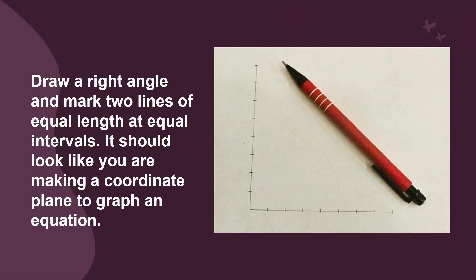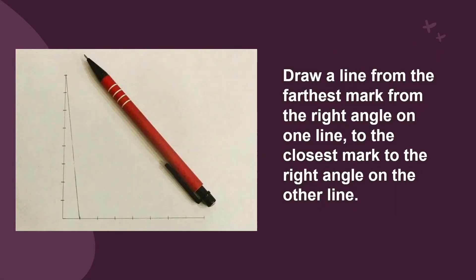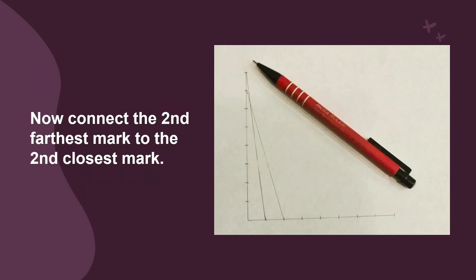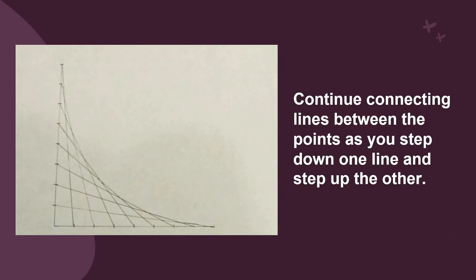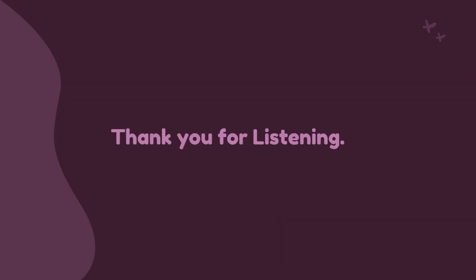Now, create a parabola from lines and a right angle. First, draw a right angle and mark two lines of equal length at equal intervals. It should look like you are making a coordinate plane to graph an equation. Second, draw a line from the farthest mark from the right angle on one line to the closest mark to the right angle on the other line. Third, now connect the second farthest mark to the second closest mark. Then you can continue connecting the lines between the points as you step down one line and step up the other. Thank you for listening everyone and I hope you enjoyed listening to our presentation and you might have learned something. Once again, thank you and God bless.